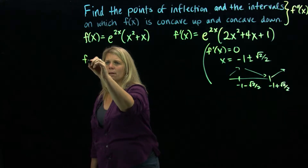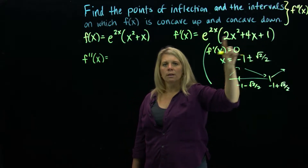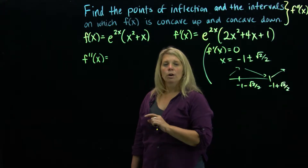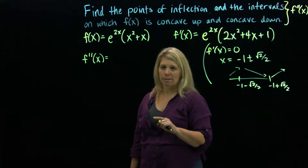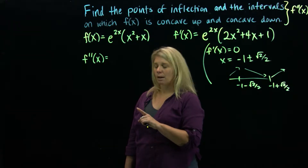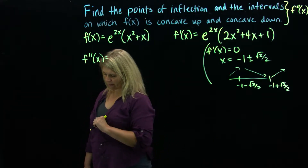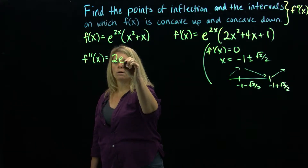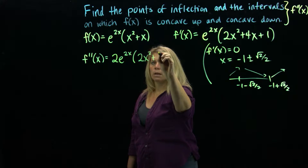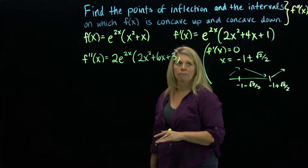First, I need the second derivative, f double prime of x. Taking that derivative will require a little product rule, a little chain rule, and some simplifying. You might pause this video, try taking that derivative and simplifying it, and see if you get the same thing. The simplified version of the second derivative is 2e to the 2x times the quantity 2x squared plus 6x plus 3.